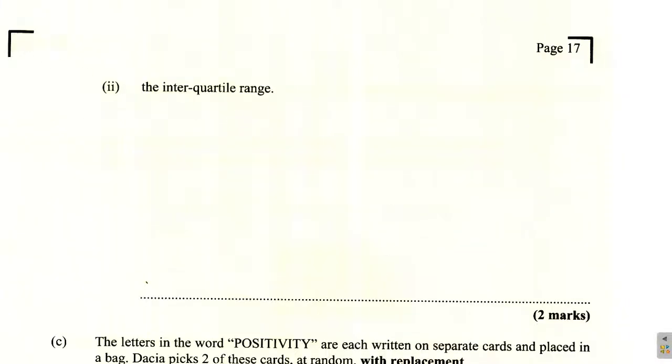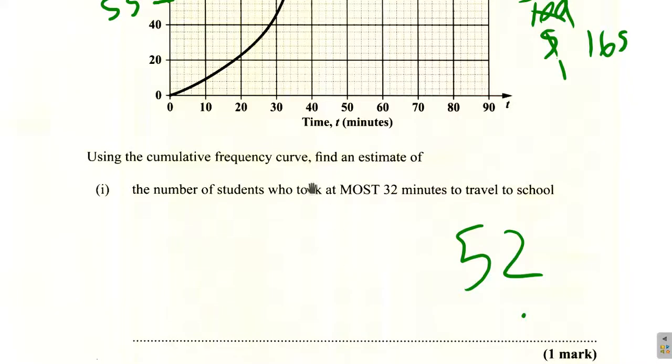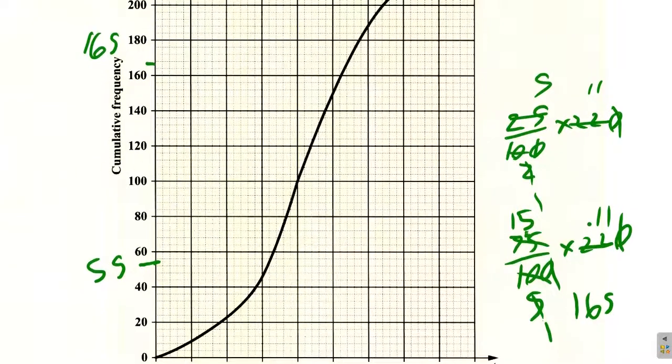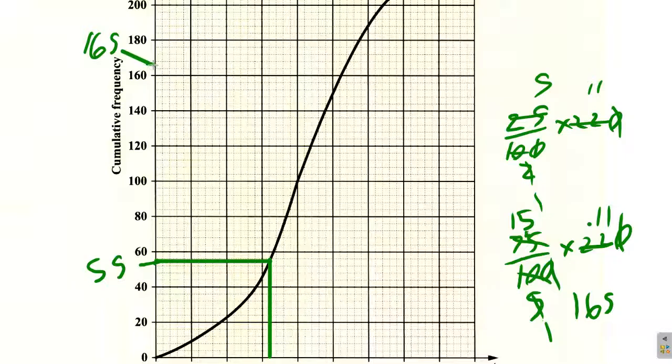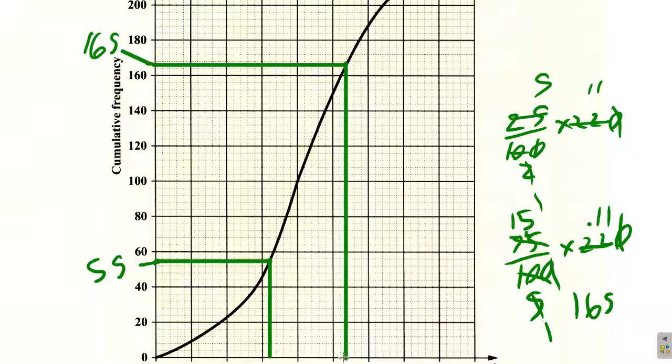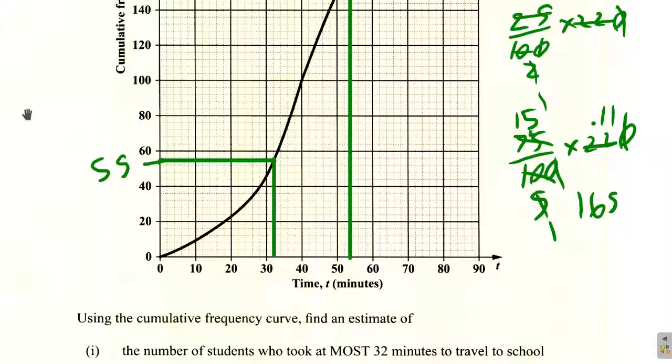What they're asking for is the interquartile range. So what we do is we project from the 55 across to the curve and then down to see where that falls. Then from the 165 we project across to the curve and then we project downward. This value seems to be about 33, and this value is about 54.